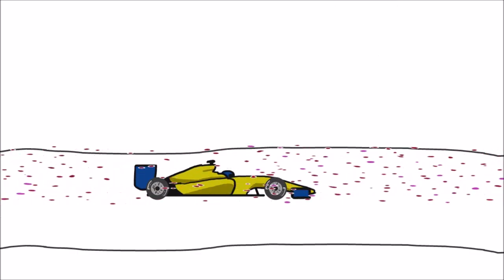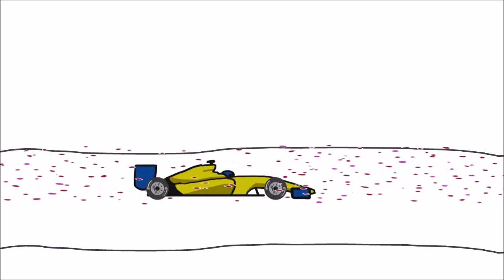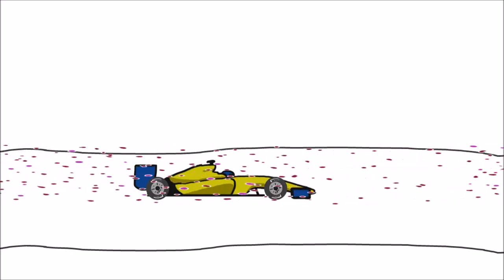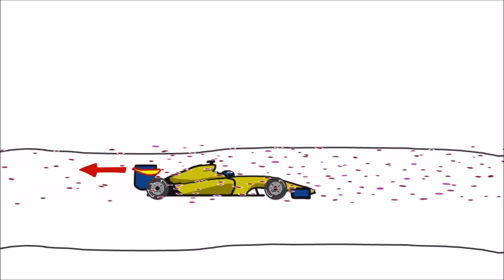This is why DRS was brought in. It was a bit of a band-aid fix to the dirty air problem. Chasing cars were overly disadvantaged by dirty air, so they'd be allowed to flatten their rear wings and cut out some of the drag to compensate.